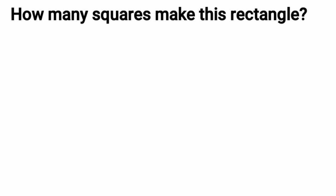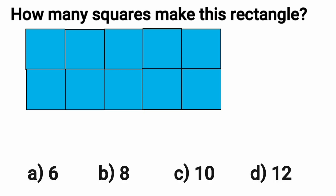Our first question is, how many squares make this rectangle? We know in a square, all four sides are equal. Let's count the number of squares shown in this figure. 1, 2, 3, 4, and 5.